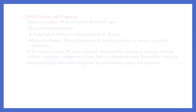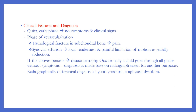Clinical features and diagnosis: in the quiet early phase there are no symptoms or clinical signs. In the phase of revascularization, pathological fracture in the subchondral bone produces pain, synovial effusion, local tenderness, and painful limitation of motion — especially abduction. If disuse persists, disuse atrophy develops. Occasionally a child passes through all phases without symptoms, and diagnosis is made based on a radiograph taken for another purpose.